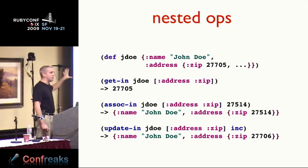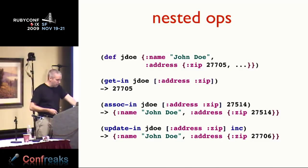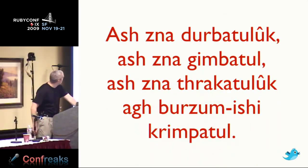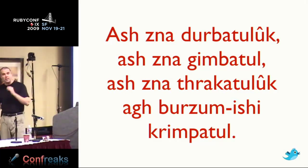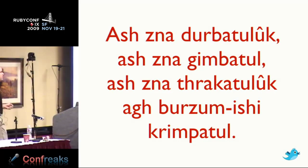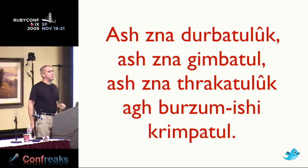To summarize what the sequence library gives you: it gives you an approach that relies on very few nouns — really one noun, the sequence abstraction. Or as we like to say in the dark speech: one thing to rule them all, one thing to find them, one thing to bring them all in the darkness.